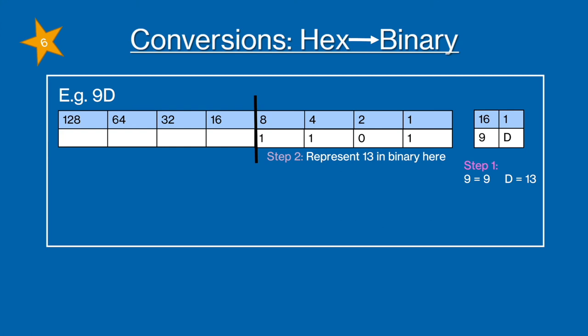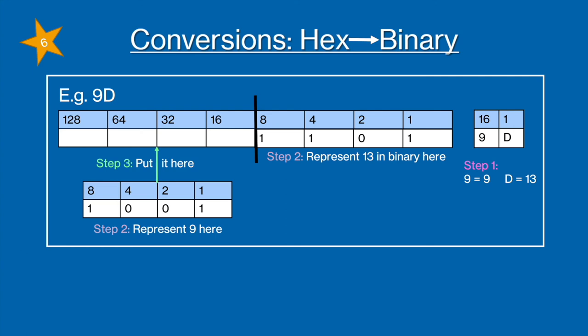Next we're going to take the 128, 64, 32 and 16 columns and replace them with an 8, 4, 2 and 1 and we're going to represent the left hand side of your hexadecimal table, so the 9 in this area. Then you're going to move it up and put it into the larger general binary table. And then that's your final answer: 1 0 0 1 1 1 0 1.